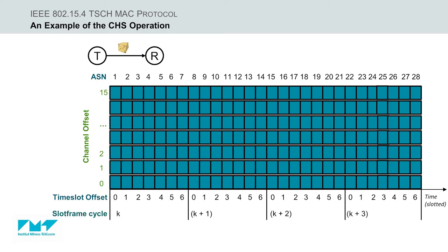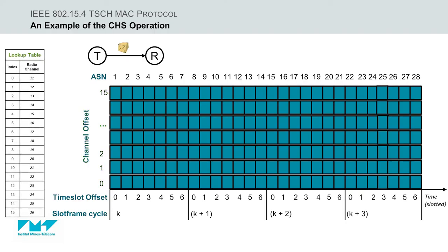While the Y axis represents the channel offset that comes with 16 different values from 0 to 15, and they represent the total available physical radio channels. Finally, on the left side, we have the lookup table, where the channel offset index values of the first column are matched with the physical radio channels of the second column.